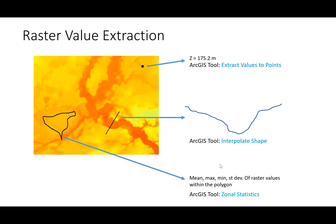We may also be interested in extracting values from a raster at specific locations. For a single point, the Extract Values to Points tool in ArcGIS returns the raster value at that location — for example, an elevation of 175.2 meters. For multiple points, this tool can process them all at once. Similarly, you can extract values along a line, such as an elevation profile along a river cross section, using the Interpolate Shape tool.